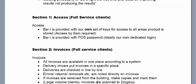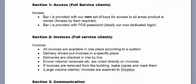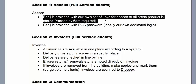Moving on — Section 1: Access. What we mean by access is simply enabling us to have all the information we need without having to bother you when you're probably in the middle of something else. For full service clients, there are just two elements. First, we need to be able to get into your bar independently by 6am. If your kitchen staff aren't consistently there to let us in, we need our own dedicated set of keys.